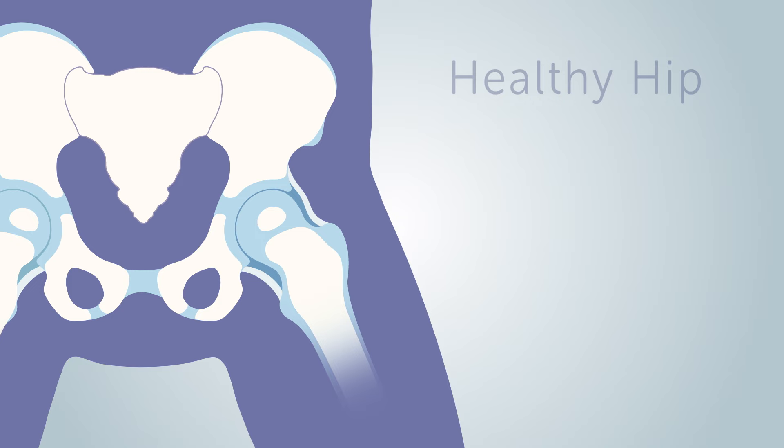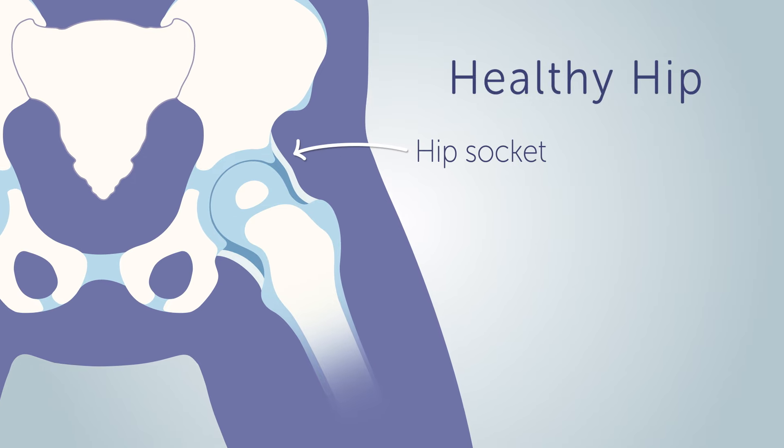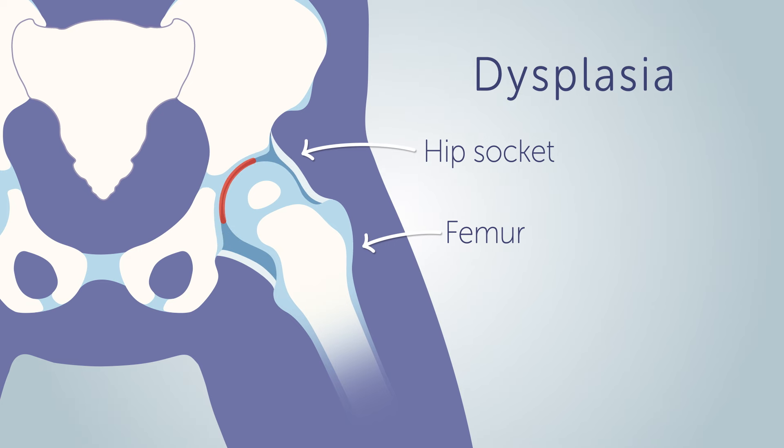Normally the acetabulum or hip socket develops to fit perfectly around the head of the femur. Hip dysplasia occurs when the hip socket doesn't develop properly and is too shallow to completely cover the head of the femur.